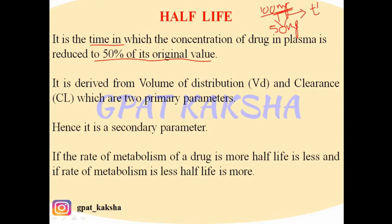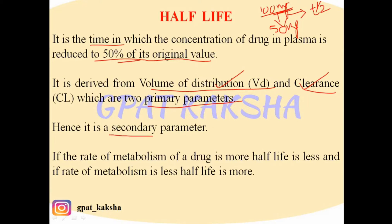Half-life is different for different drugs. It is derived from volume of distribution and clearance, which are the two primary pharmacokinetic parameters, as discussed in previous sessions. Since half-life is derived from these two primary parameters, it is considered a secondary parameter.